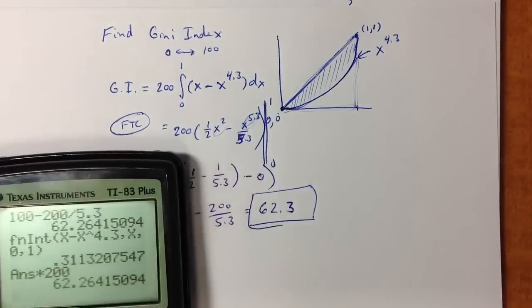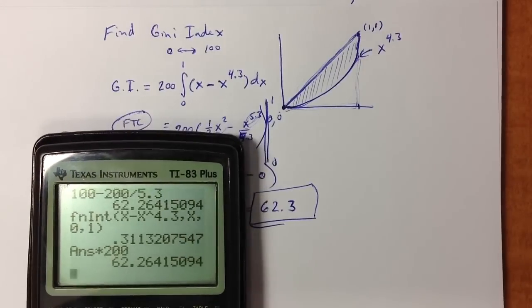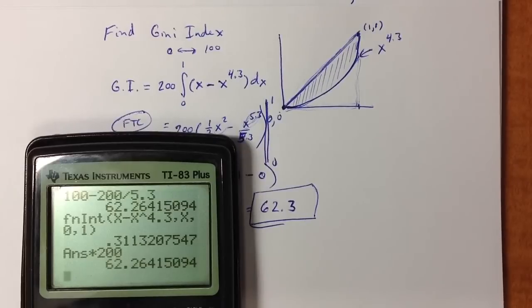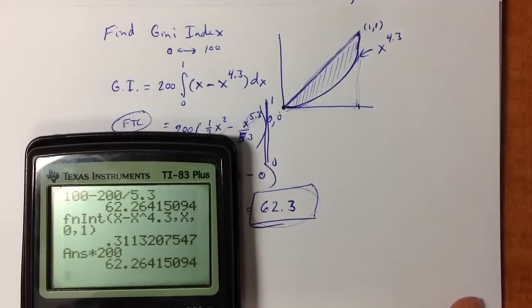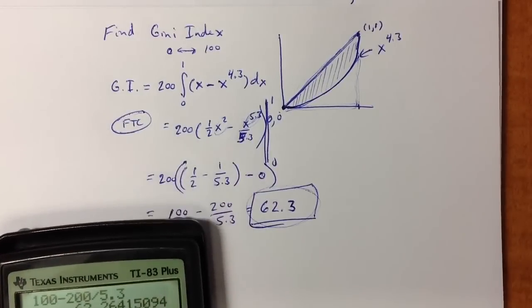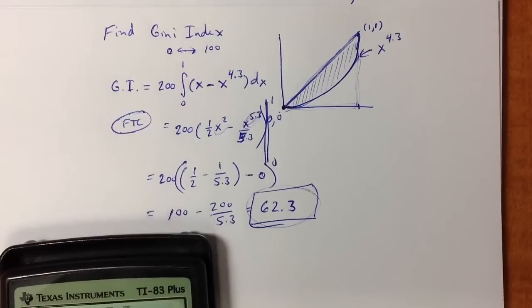All right. So the Gini index, essentially, is kind of like a percentage that represents how far toward complete inequality the country, the distribution, is. So this would be like 62% of the way to complete inequality. A lower Gini index represents more equality. A higher Gini index represents more inequality.